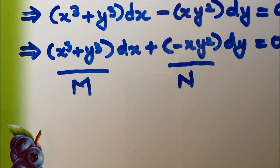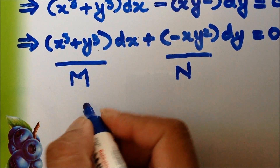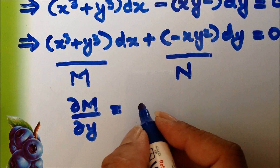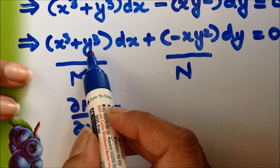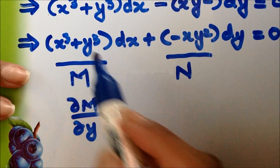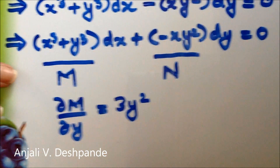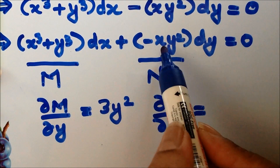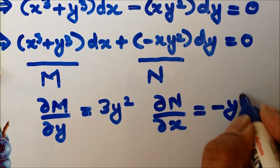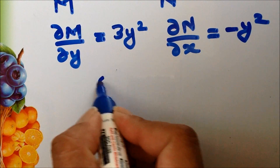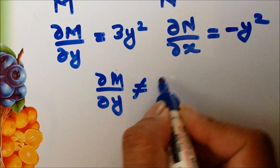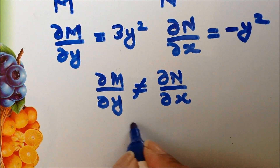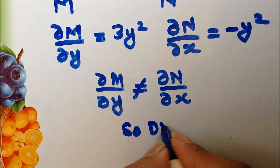Now we check whether the condition for exactness is satisfied. We find ∂M/∂y, differentiating (x³ + y³) with respect to y, which gives 3y². Then we find ∂N/∂x, differentiating −xy² with respect to x, which gives −y². Since ∂M/∂y ≠ ∂N/∂x, the given equation is inexact.